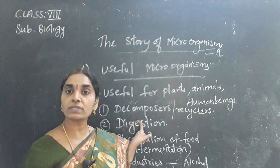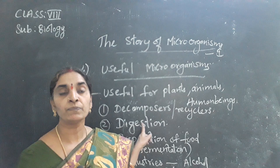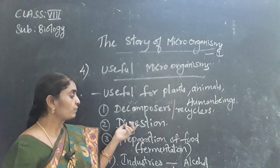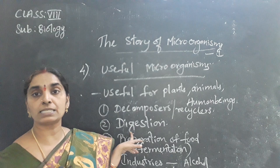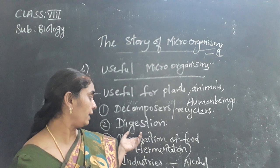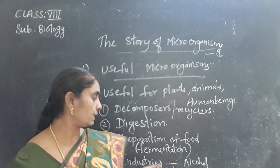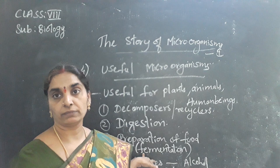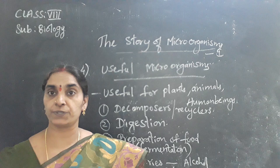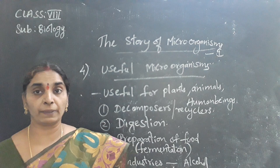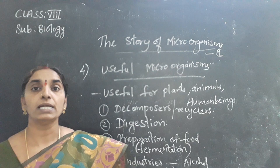In summary, the uses of micro-organisms: they decompose dead and decayed organic matter and return nutrients to the soil, improving soil fertility and plant growth. They help in digestion of food in the intestines of animals and cattle, including digestion of cellulose in plants. They aid in food preparation through fermentation — idli, dosa, cheese, bread — and are used in industries for alcohol production and drug preparation.